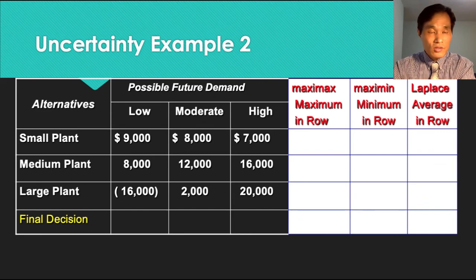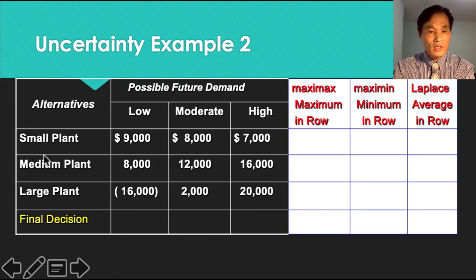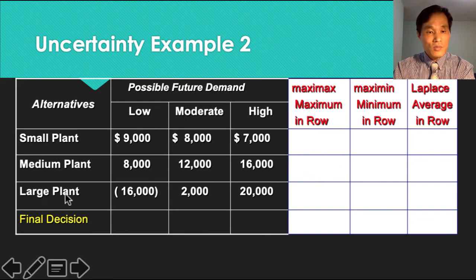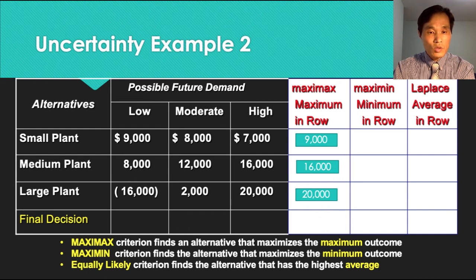Let's do another exercise. We have small plant, medium plant, and large plant — three alternatives. In this case, we also have three options for market conditions: low, moderate, and high. According to MaxMax, you want to choose the maximum value that each alternative would produce. For small plant, 9,000 is the maximum. For medium plant, 16,000 is the highest. For large plant, 20,000 is the largest. The maximum among these three values is 20,000, so the MaxMax choice is the large plant at $20,000.